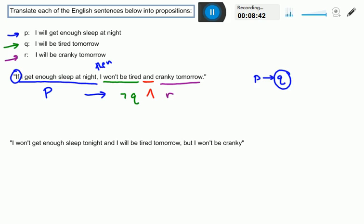So taking all the colors out of this so that it's a little bit easier to see, you would have basically P implies parentheses, not Q and R. And that would be the final answer here. You won't be tired and cranky tomorrow. It implies that both of these will follow from P.